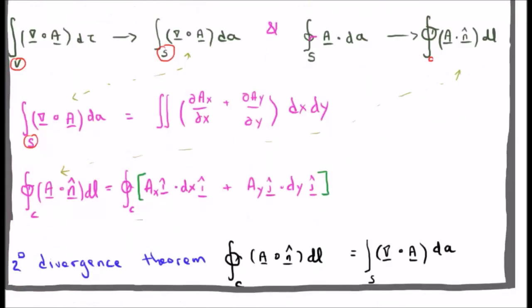Putting this all together we can suggest that the two dimensional divergence theorem is none other than the closed line integral of A dot n hat dL which is equal to the surface integral of the divergence of A. Is this Green's theorem?